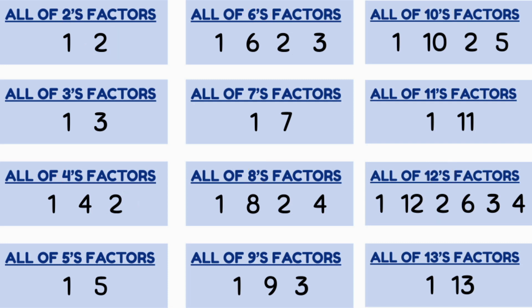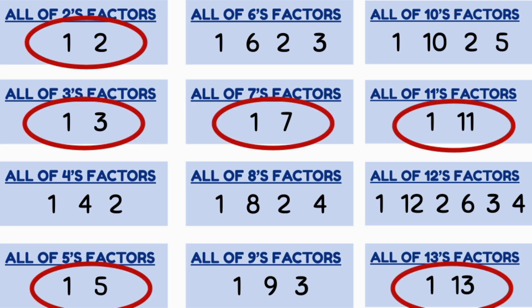Looking back at our factors, we can see that there are many numbers which only have two factors. Here we can see that two, three, five, seven, 11 and 13 all only have two factors, which are always themselves and one.